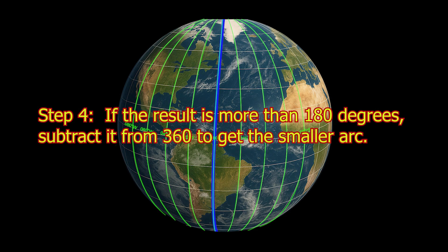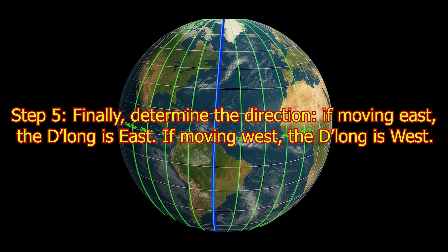4. If the result is more than 180 degrees, subtract it from 360 to get the smaller arc. 5. Finally, determine the direction. If moving east, the D-long is east. If moving west, the D-long is west.